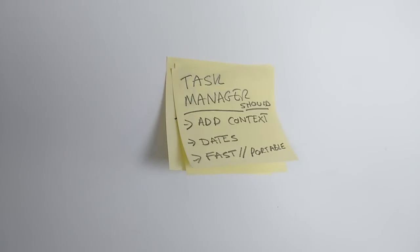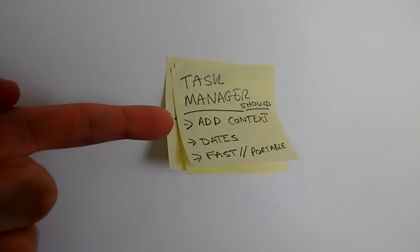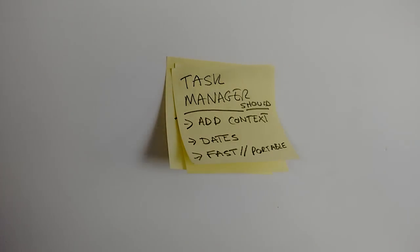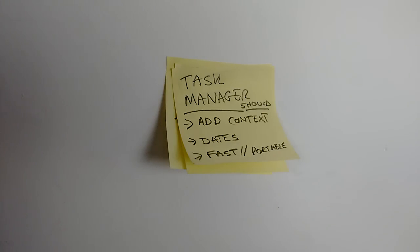A task manager should be able to add context — and context is essentially you being able to add the information around the task to get it complete. So if you were to add a task like 'write 500 words on Napoleon Report' and add the document and the information behind it, that's context. That's the context to actually complete the task.